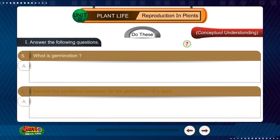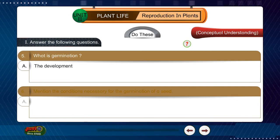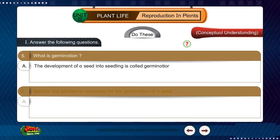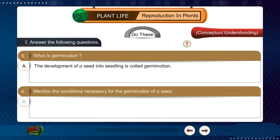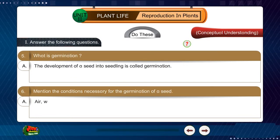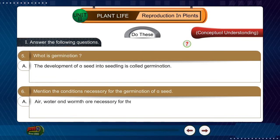Inside the seed leaves there is a baby plant. This baby plant has a tiny shoot and tiny root. Question 5: What is germination? Answer: The development of a seed into a seedling is called germination. Question 6: Mention the conditions necessary for the germination of a seed. Answer: Air, water, and warmth are necessary for the germination of a seed.